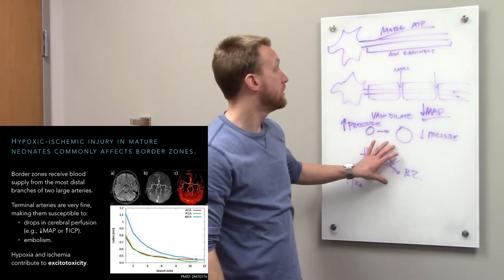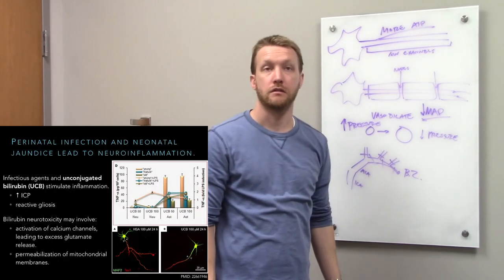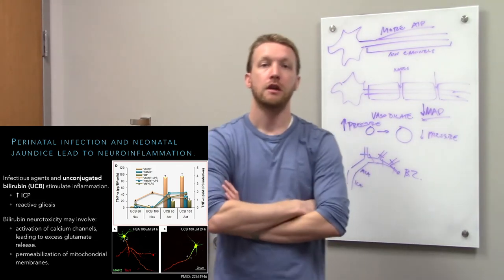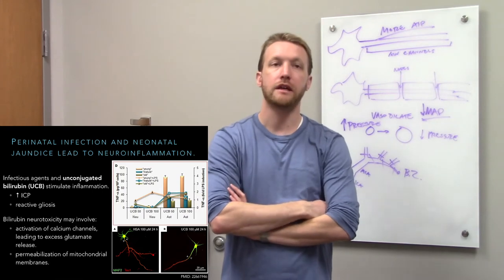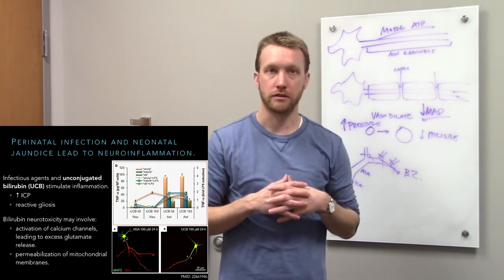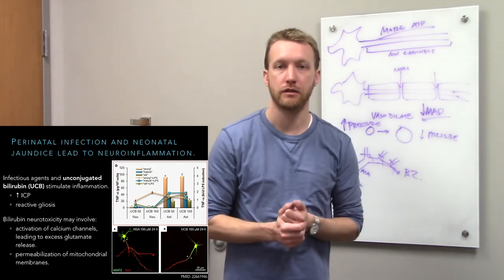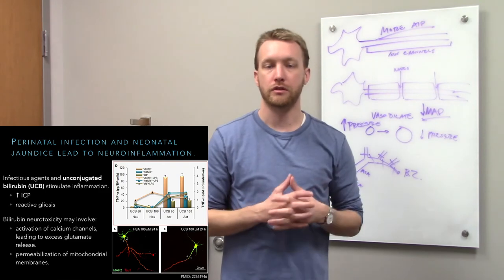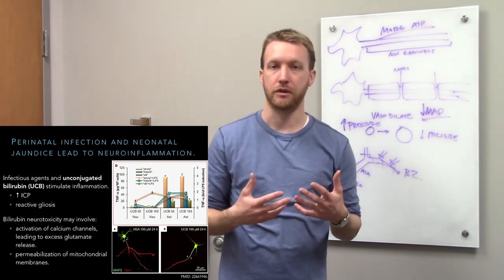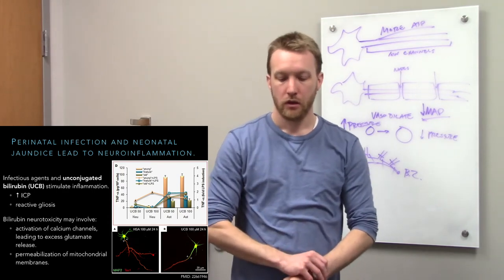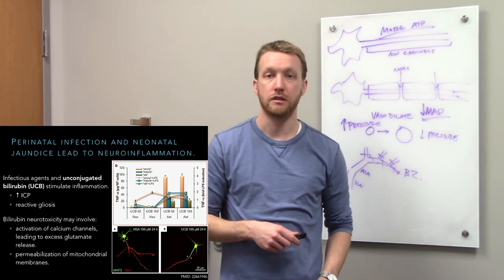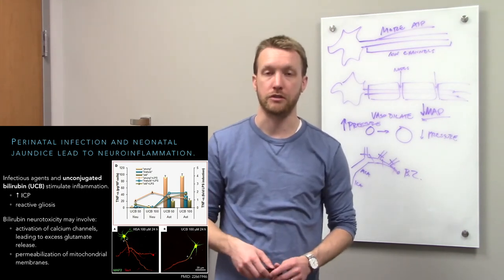Perinatal infection and inflammation contribute to cerebral palsy partly through the effects of bilirubin. During neonatal jaundice — which occurs to some degree in all newborns as excess red blood cells are broken down — excessive buildup of unconjugated bilirubin can stimulate inflammation in the central nervous system, potentially leading to cerebral palsy.